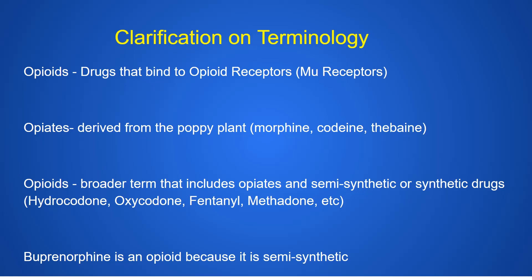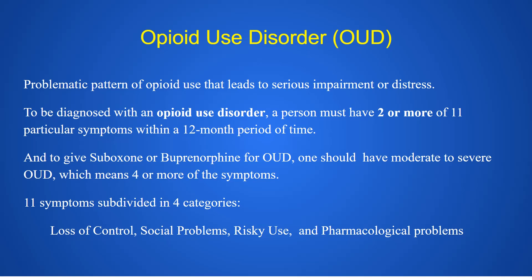Opioid use disorder is simply a problematic pattern of opioid use that leads to serious impairment or distress. To be diagnosed, you need to meet two or more of 11 particular symptoms within a 12-month time period. To prescribe Suboxone or buprenorphine for opioid use disorder, the patient should have moderate to severe opioid use disorder — moderate means four or more symptoms.